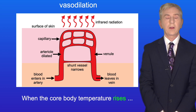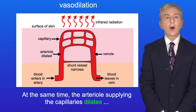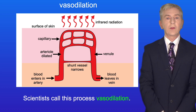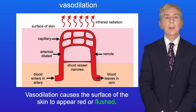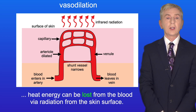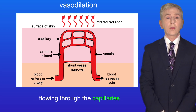When the core body temperature rises, the arteriovenous shunt vessel narrows. At the same time, the arteriole supplying the capillaries dilates — in other words, widens. This increases the blood flow through the capillary network. Scientists call this process vasodilation. Vasodilation causes the surface of the skin to appear red or flushed. Because more blood is passing through the outer layers of the skin, heat energy can be lost from the blood via radiation from the skin surface, reducing the temperature of the blood flowing through the capillaries.